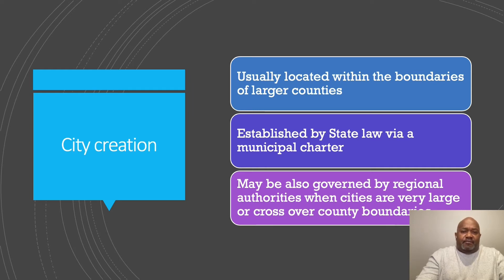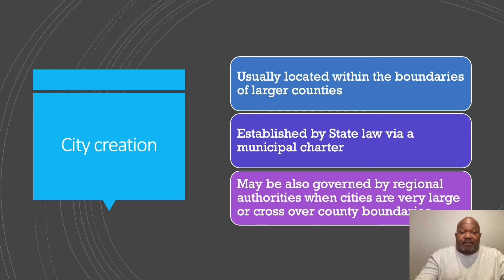How do we get to a city or a town? They're usually established by state law — that's where the establishment of a city begins. It's done via a municipal charter. A charter is the founding document of a city or town — you can think of it as the city-level constitution. It talks about the functions of the city, the roles, powers, and authority of the representatives that deal with the city.